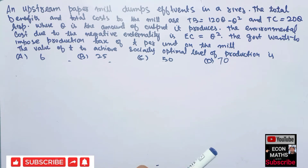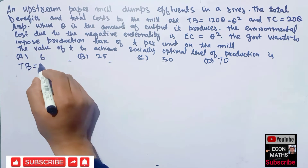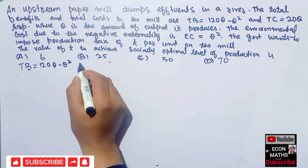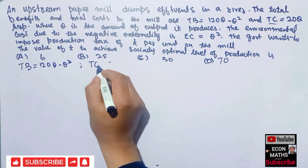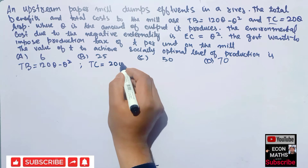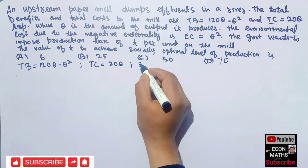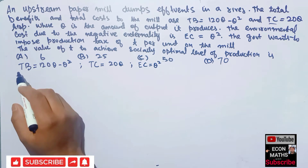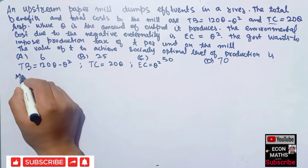First of all, we will note what is given to us. Total benefit is given as 120q minus q squared. Total cost is given as 20q, and environmental cost is given as q squared. From the total benefit curve, we can find the marginal private benefit curve, which is simply the derivative of the total benefit function.